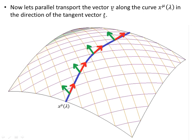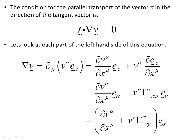Now let's parallel transport the vector V along the curve x^mu of lambda in the direction of the tangent vector T. We're going to parallel transport V in small steps along the curve, keeping the vector V parallel to itself, moving it in the direction of the tangent vector. The condition for the parallel transport of a vector V in the direction of the tangent vector T is: T · ∇V = 0, that is, T dot nabla V equals zero.